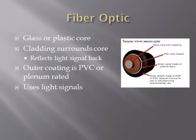Fiber optic is made up of a center glass or plastic core with cladding surrounding the core. The cladding reflects the signal back into the core. Fiber optic uses light signals to transmit data, unlike Ethernet and coax, which use electric signals.